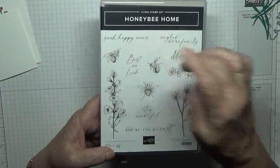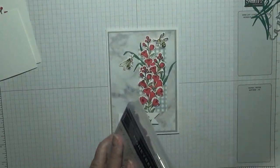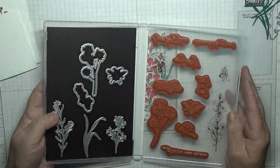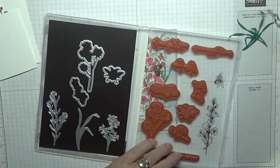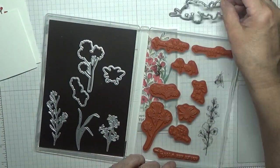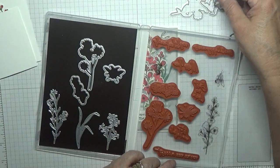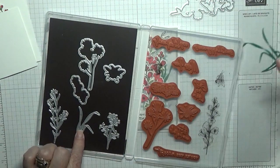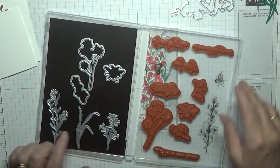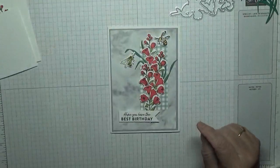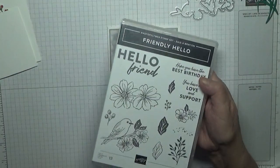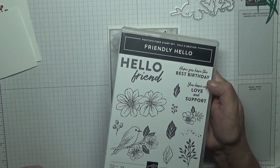I made this card using the stamp set Honey Bee Home and I'll be using this stamp, these two bees, that's it offer there. The dies, I've got this one for the flower and the two bee dies and I've also cut out two bits of grass. Sentiments come in from Friendly Hello, I hope you have the best birthday.